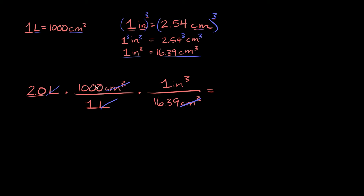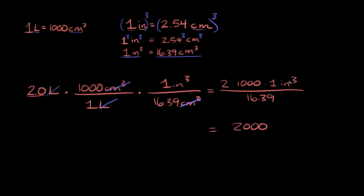Now we just multiply everything on top and divide by everything on the bottom. On top: 2 × 1,000 × 1 = 2,000 inches cubed. On the bottom: 1 × 16.39 = 16.39. So 2,000 divided by 16.39 is approximately 122 inches cubed. Don't forget your units — inches cubed.